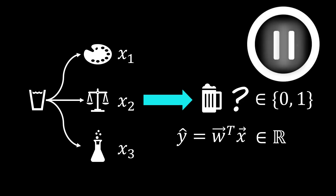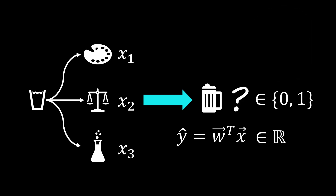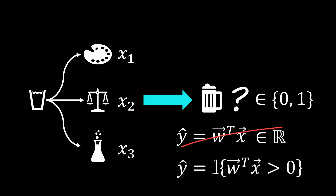Pause the video and think for yourself whether you can come up with a solution. A solution is the indicator function, which assigns a value of 1 if the output is positive and a value of 0 otherwise. However, this changes the model, and we therefore do not have a closed-form solution to calculate the weights w. Also, the gradient of the indicator function is not informative. In this video, we will therefore discuss a statistically inspired approach to train our weight vector w.